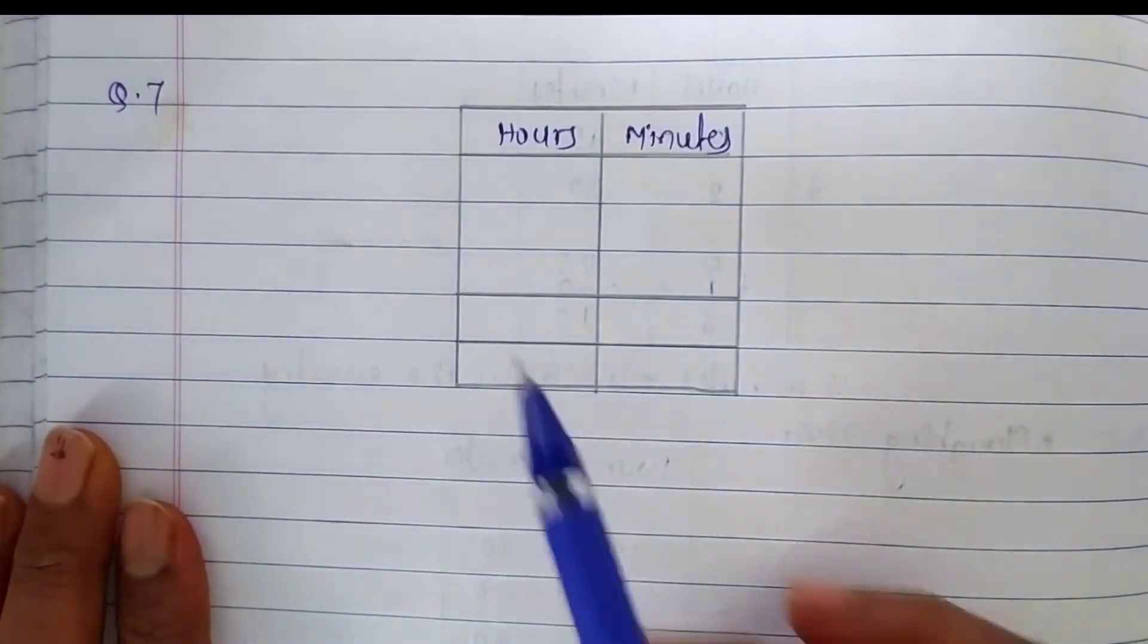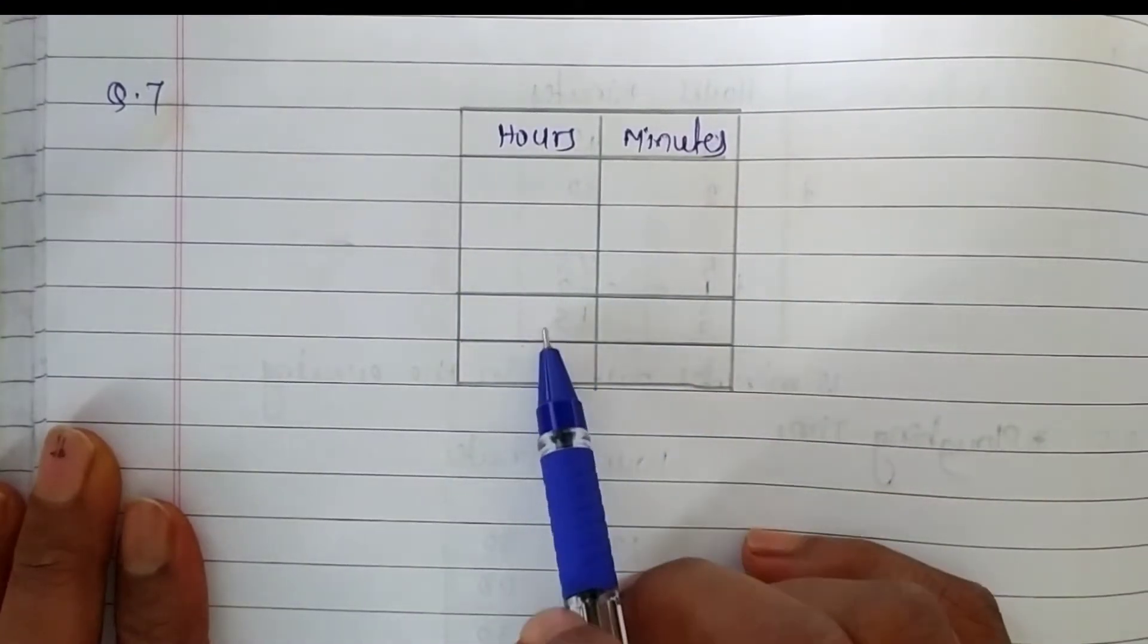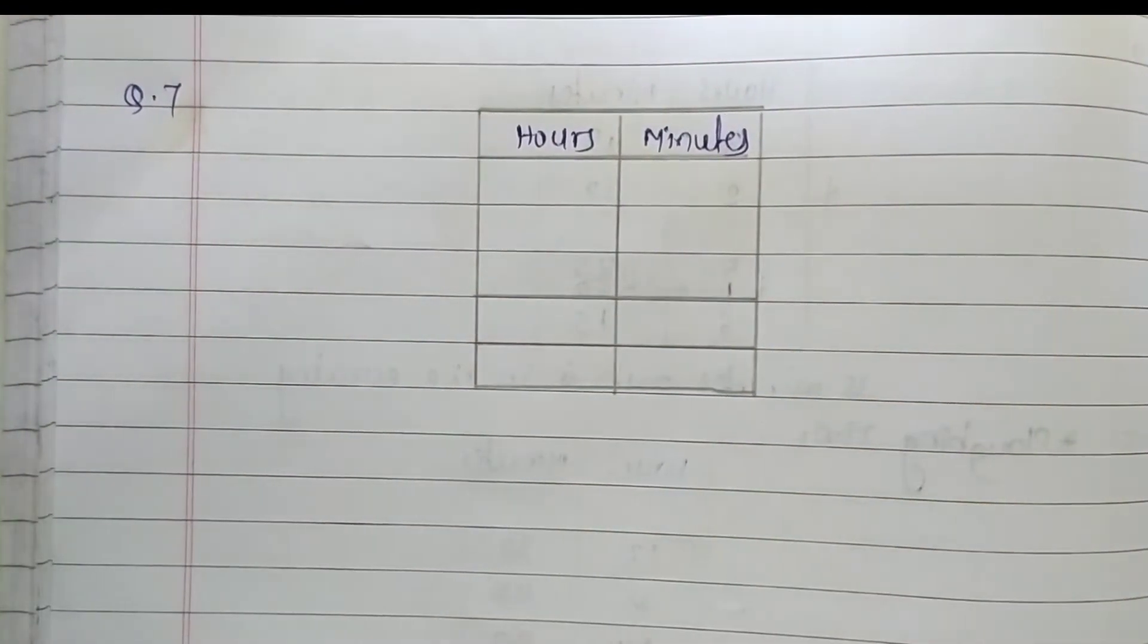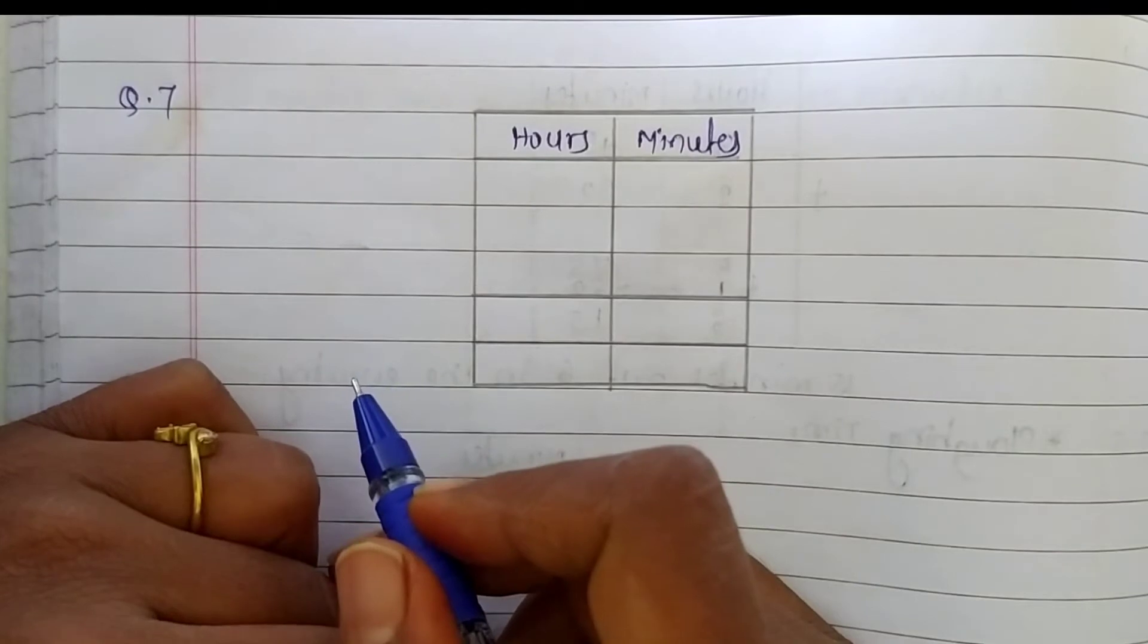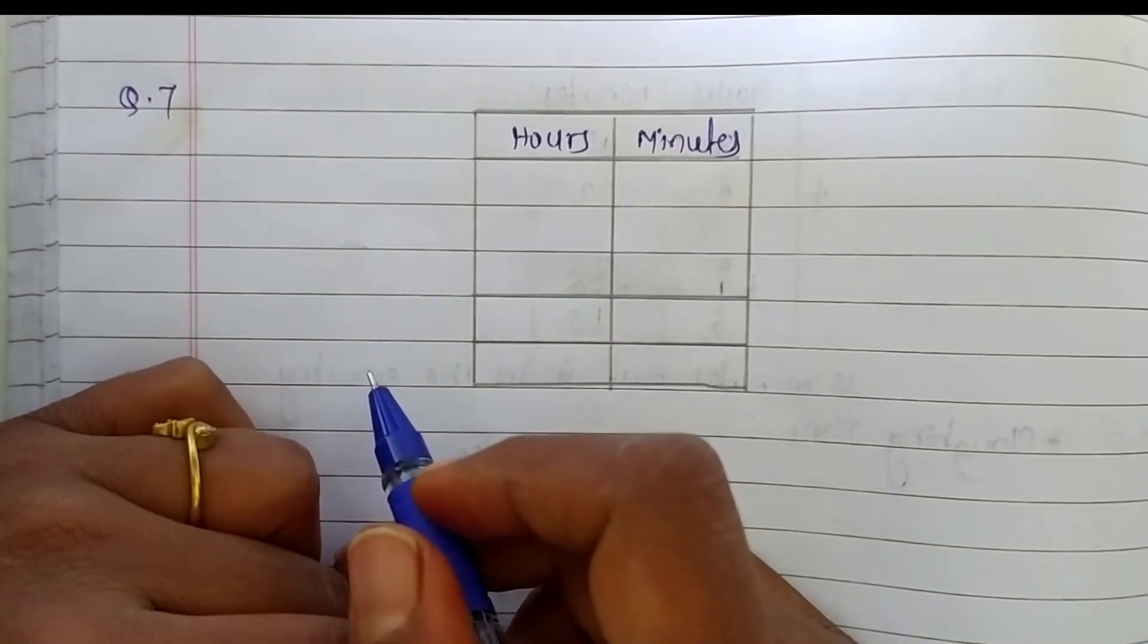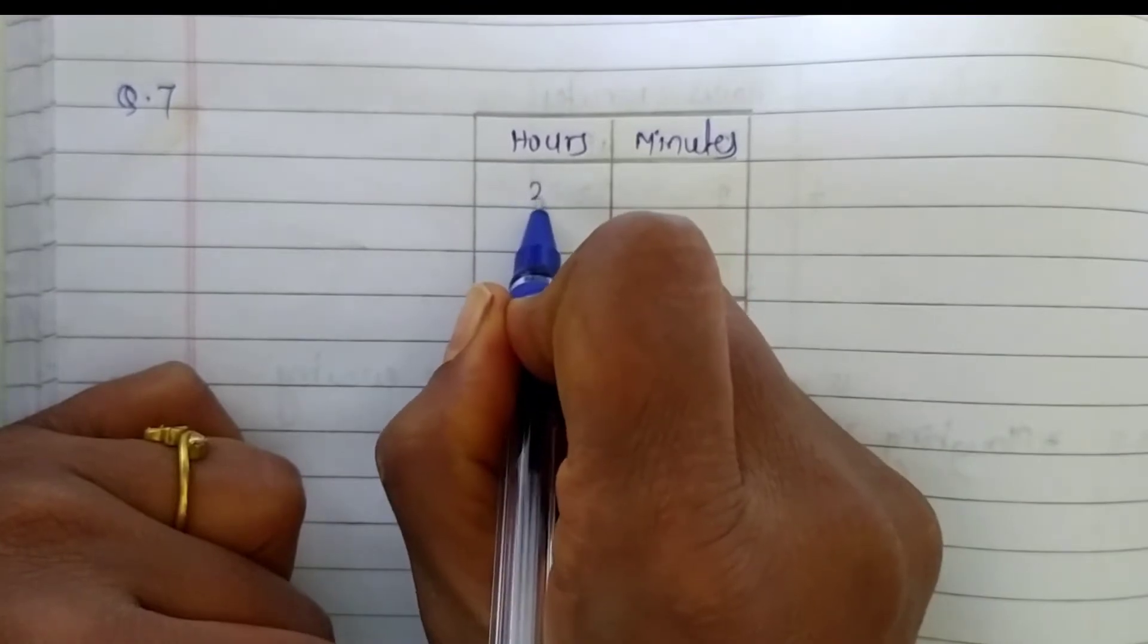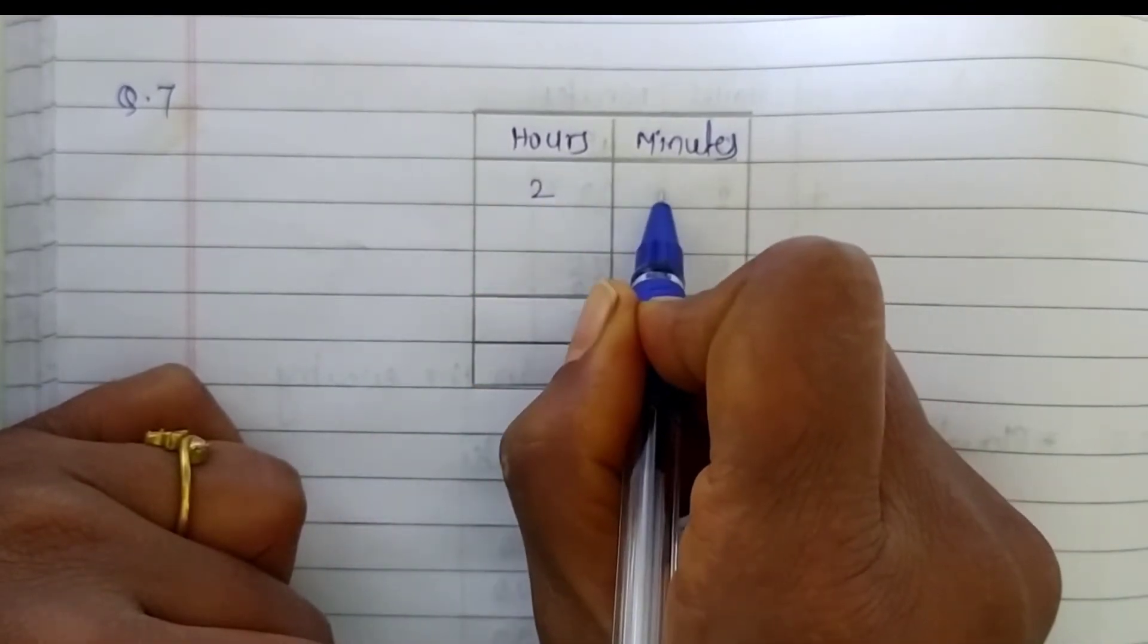Let's make columns like this. Hours and minutes, make an extra column on lower side because this question is based on addition. So first of all, we are going to write morning minutes. It's 2 hours and 25 minutes. Write here 2 hours and in minutes column there are 25 minutes.